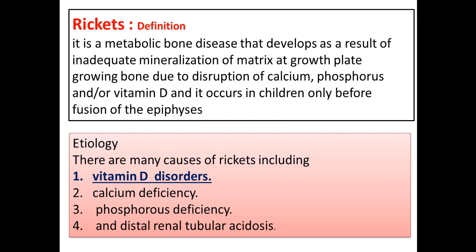What is the definition of rickets? It is a metabolic bone disease that develops as a result of inadequate mineralization of the matrix and growth plate in the growing bone, due to disruption of calcium, phosphorus, and/or vitamin D. It occurs in children only before fusion of the epiphysis — it is a disease of the developing bone, not the mature or adult bone. In adults, we call it osteomalacia.